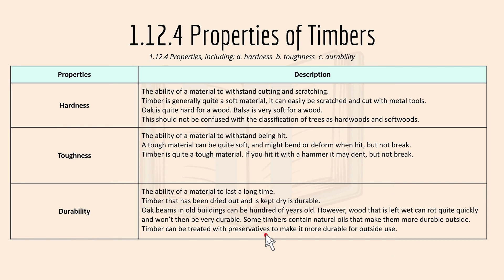1.12.4 covers the properties of timbers. Hardness is the ability of a material to withstand cutting and scratching. Timber is generally quite a soft material as it can be easily scratched and cut with metal tools. Oak is quite hard for a wood, and balsa is very soft — this should not be confused with the classification of trees as hardwoods or softwoods. Toughness is the ability of a material to withstand being hit. A tough material can be quite soft and might bend or deform when hit but not break. Timber is quite tough — if you hit it with a hammer it may dent but not break.